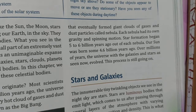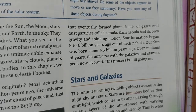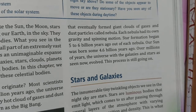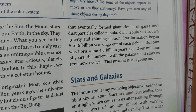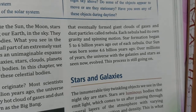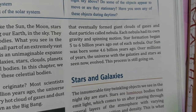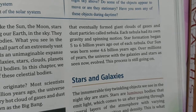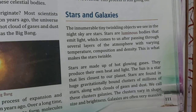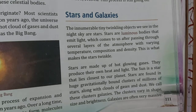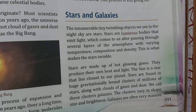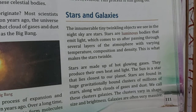The sun is a star that lies closest to our planet. Stars are made of hot glowing gases and they produce their own heat and light. The sun is also a star.